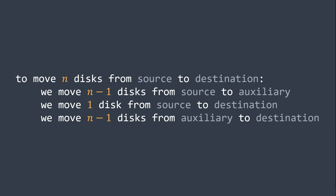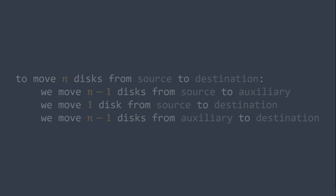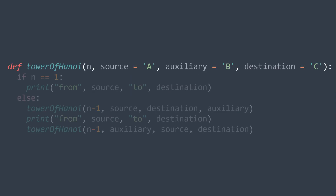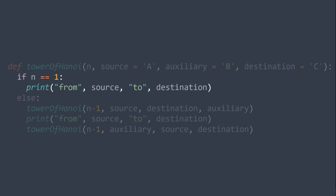If we wanted to write the function in code, in Python we would first define the function. It takes N, the number of disks, and it takes the source, the auxiliary, and the destination. The initial value of source is A, the initial value of auxiliary is B, and the initial value of destination is C. Now inside the function, we set the base case — it's when N is equal to 1. In that case, we just move 1 disk from source to destination, so we print: we move from source to destination, where source and destination are variables of course.